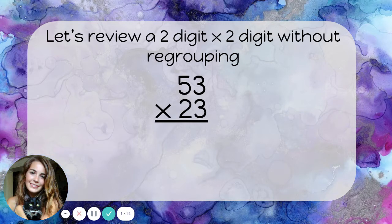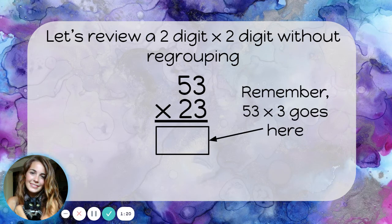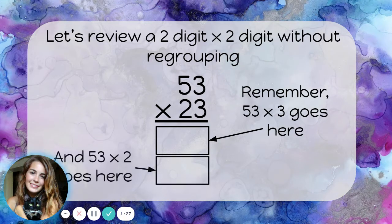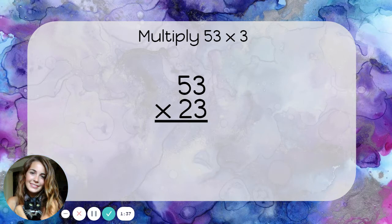Let's review a two-digit times two-digit without regrouping. We'll solve fifty-three times twenty-three. Remember, we're going to be multiplying fifty-three times three and putting our answer here, and then we'll be multiplying fifty-three times two and putting it underneath. Also remember there's going to be a zero here. So let's start with fifty-three times three — you can kind of just ignore the two in twenty-three and focus on fifty-three times three.